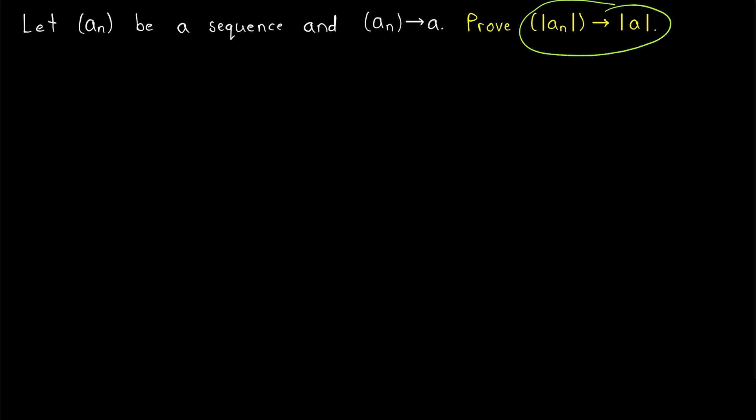Since we're trying to prove that the sequence of absolute values of An converges to the absolute value of A, we'll be trying to show that the absolute value of a term of the sequence, which has this form, is less than epsilon away from the limit. So this is our expression representing the distance between a term of our sequence and the supposed limit. When you see this difference of absolute values in an absolute value, you should immediately think of the reverse triangle inequality.